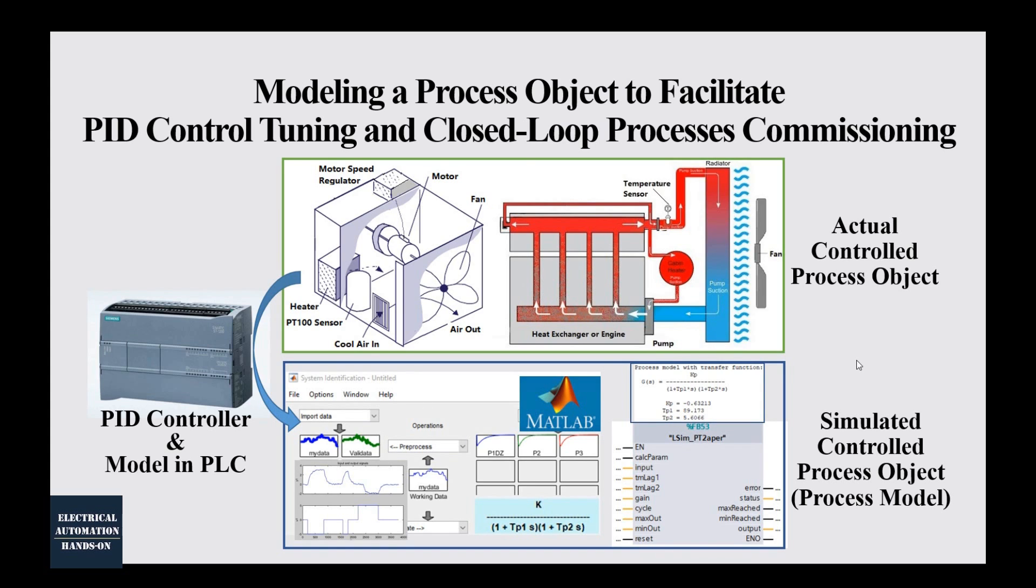So using this digital trains, this simulated controlled process object, we can speed up the control and commissioning time. It can save you tons of time for waiting the process transition time. It can eliminate any potential dangerous issues. This also explained the motivation I'm going to do this series video. First, it can save us tons of time on the PID commissioning. And it's also eliminate any danger issues during this transition and during the commissioning test.